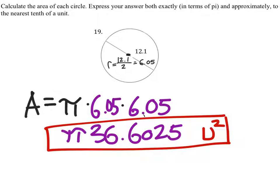So all I've got to do is multiply that number by pi to get the approximation, which would be 115 square units.